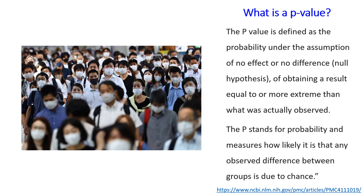Going back to our face mask and COVID-19 example: the null hypothesis is that wearing a face mask does not reduce the transmission of COVID-19. If our study says there is a difference, what is the probability that we are saying there is a difference when actually there is no difference in COVID-19 transmission from wearing a face mask? That probability is the p-value. The smaller that probability, the better — it means we are more likely to be telling the truth, that there really is a difference.